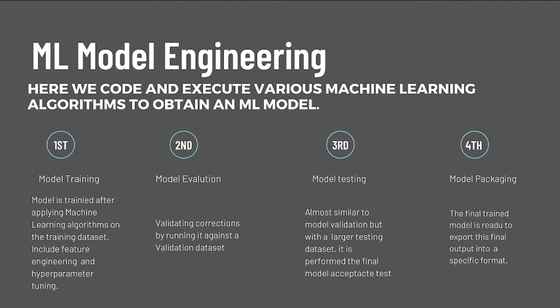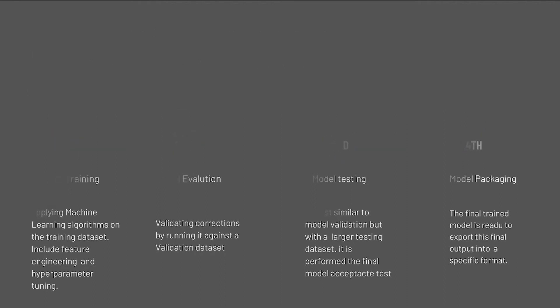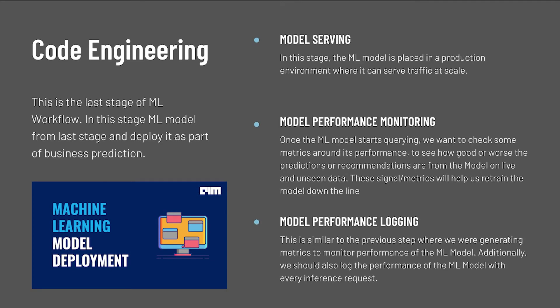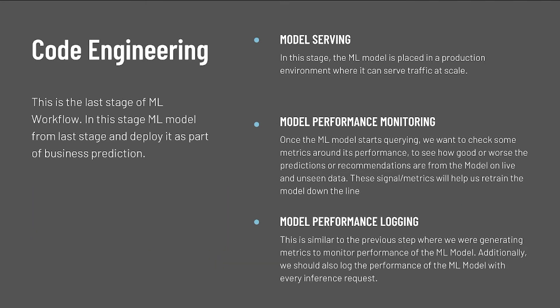Now finally, let's look at the last stage of the ML workflow, which is ML model deployment. In this stage, we take the trained ML model from the last stage and deploy it as part of a business application. This integration step requires a feature vector as input to the ML model to generate predictions — for example, which news feed to show to a particular user on social media, or which user to match to someone on a dating platform. This is where the culmination of the entire ML workflow happens.